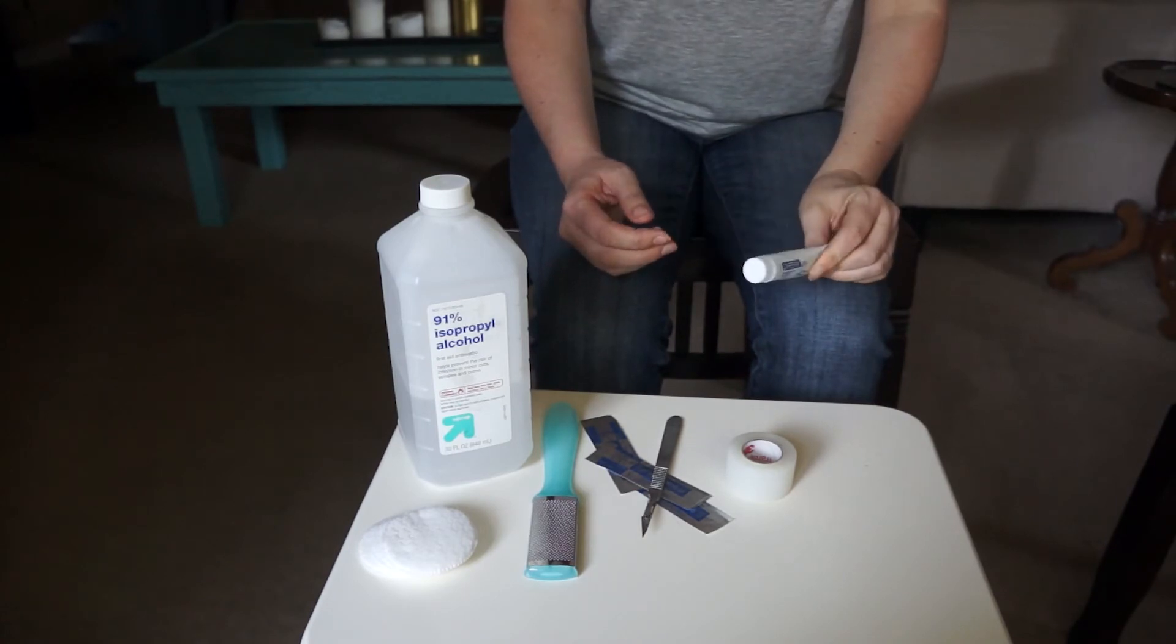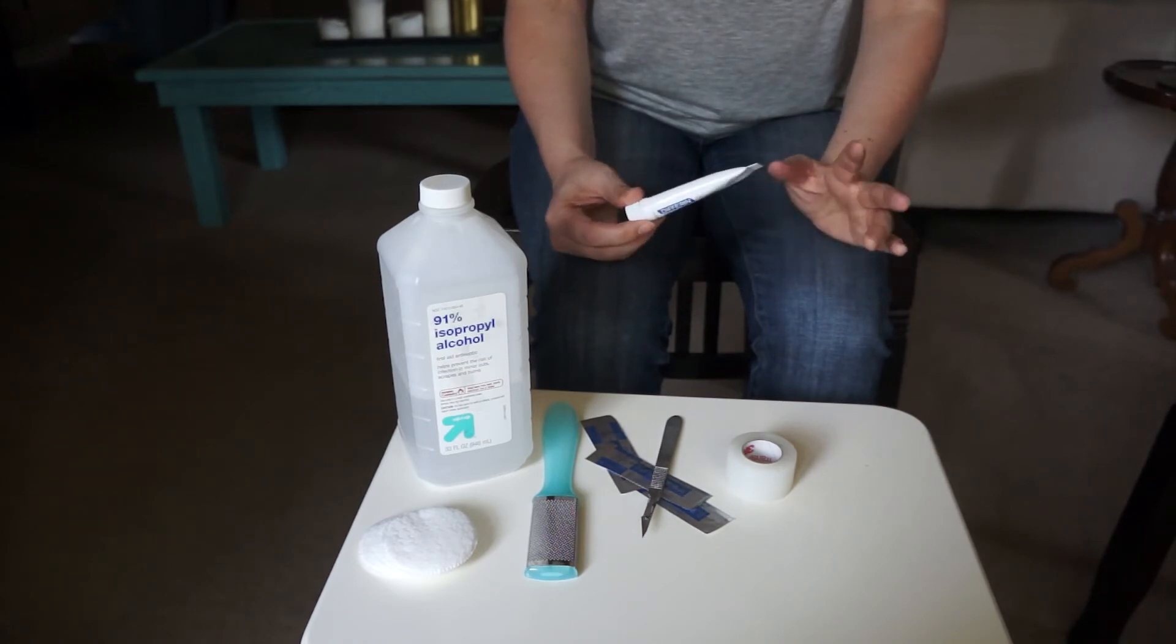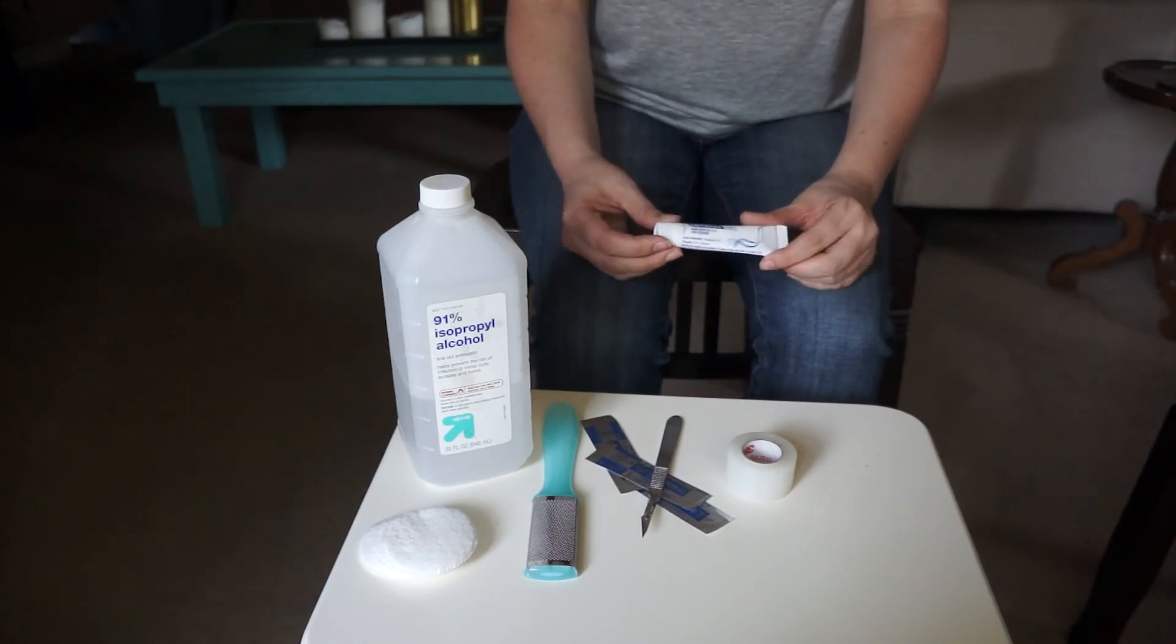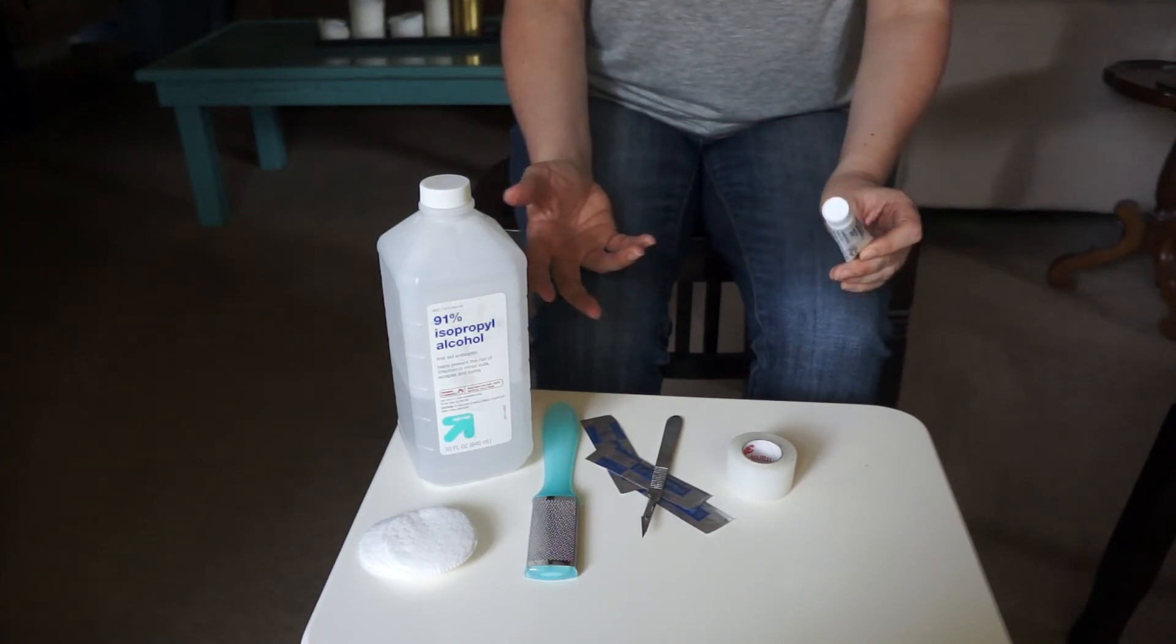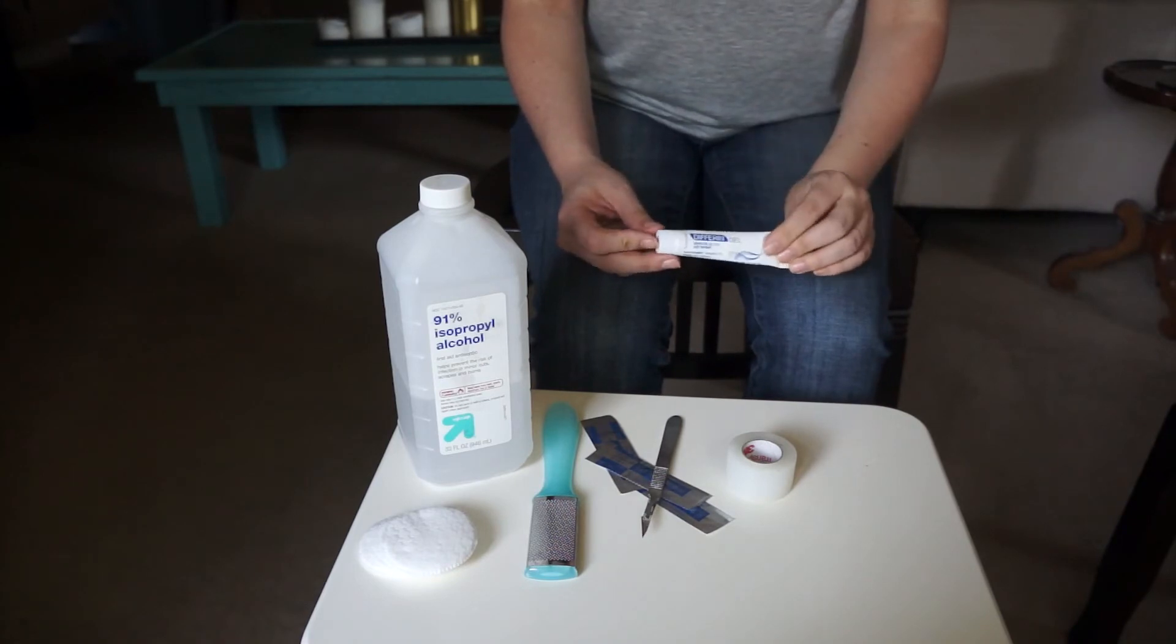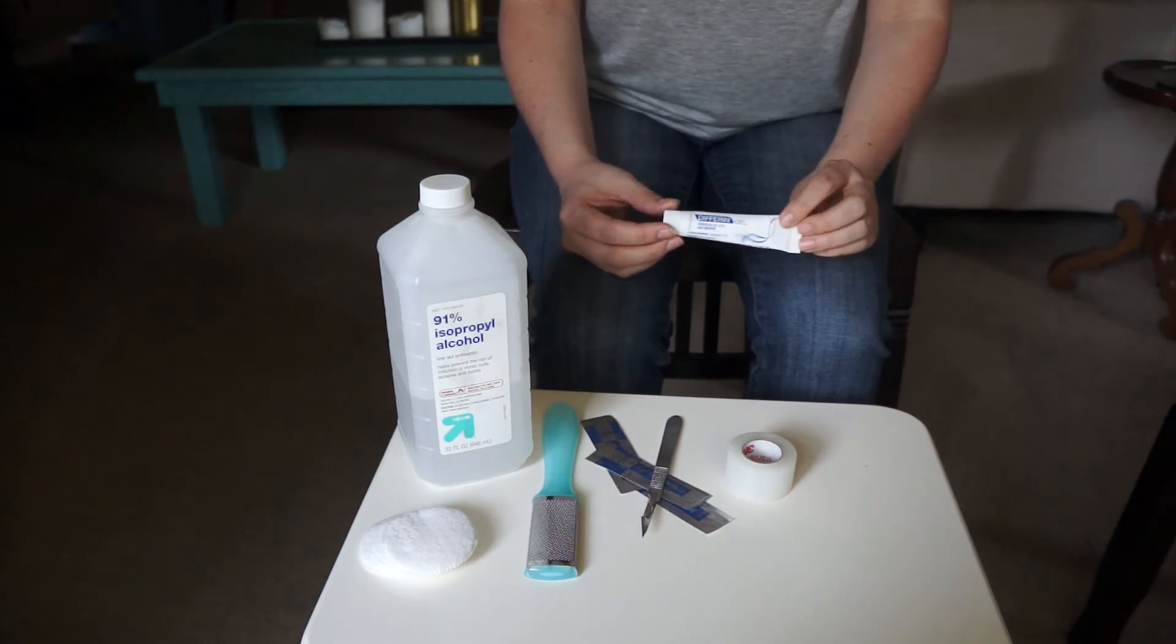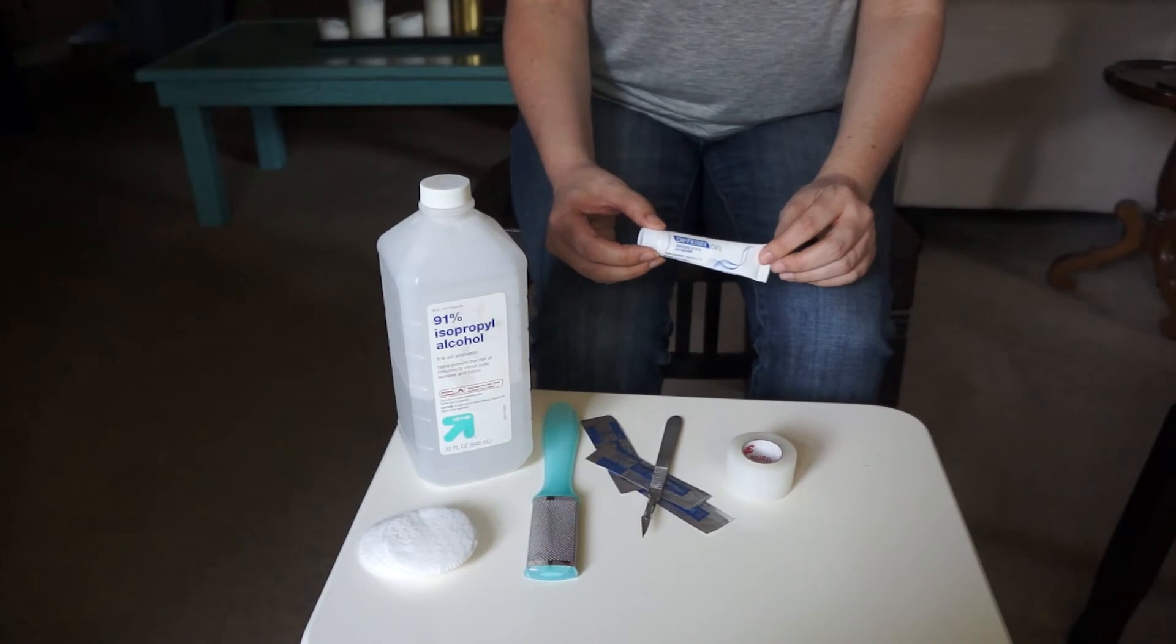I purchased this specific adapalene gel at Walmart for, I think, $12.80. So it was not overly expensive. However, I do think I'll have to use multiple tubes of this. You can also purchase this online through Amazon and I believe online through Target. But I'll leave a link below so that you can get all the information that you need. So this will be the specific gel that I'll be using throughout the treatment.